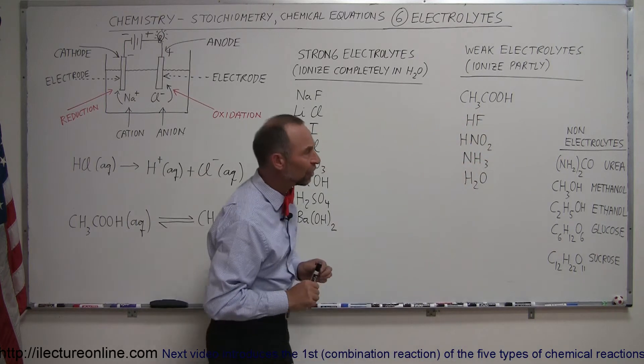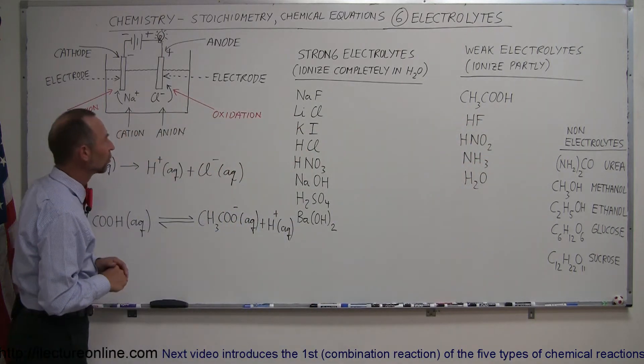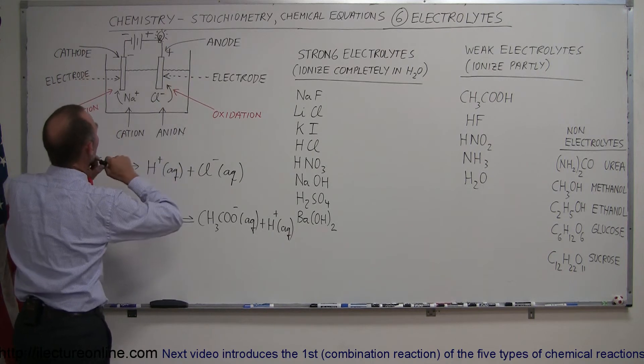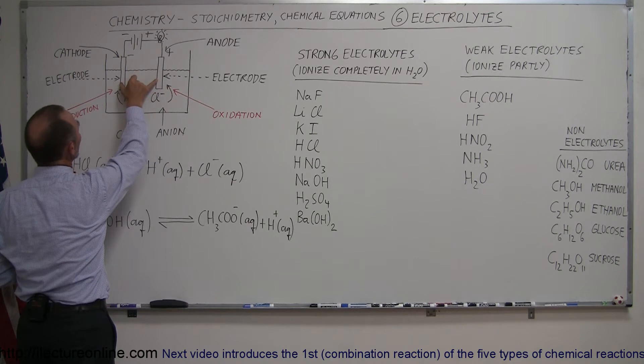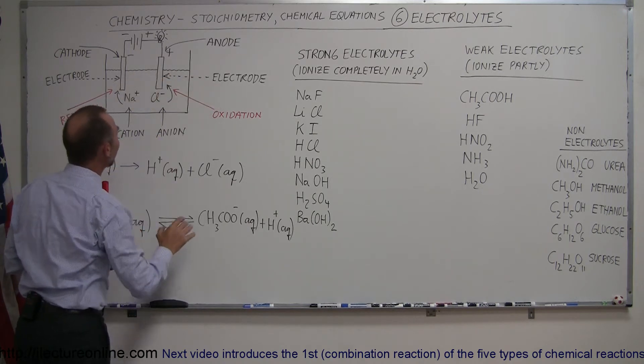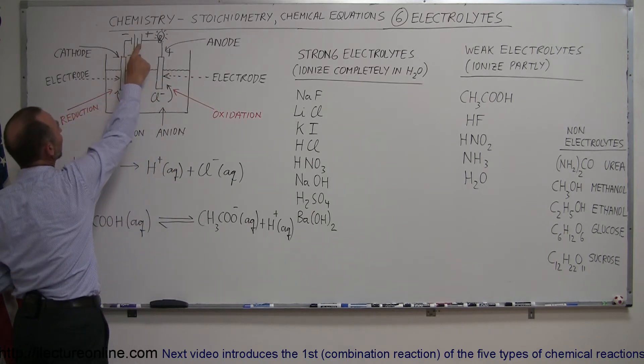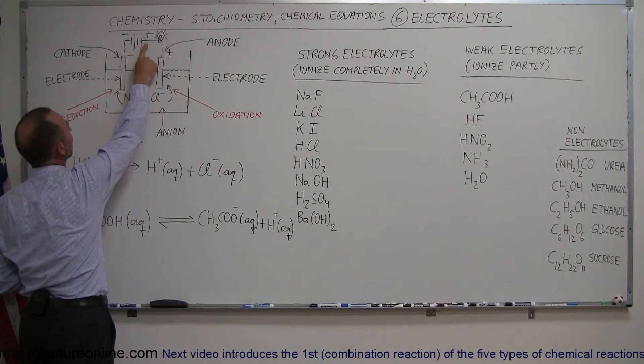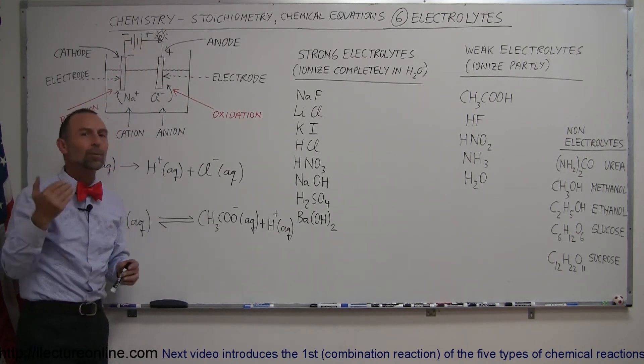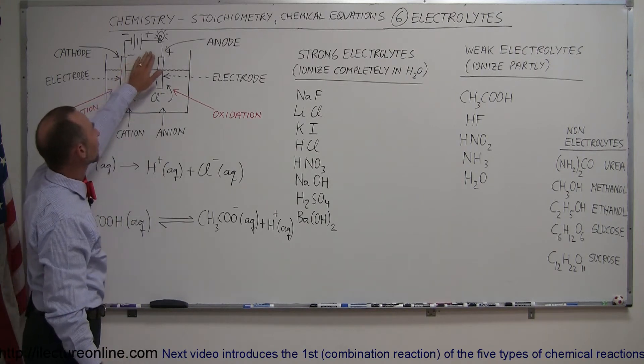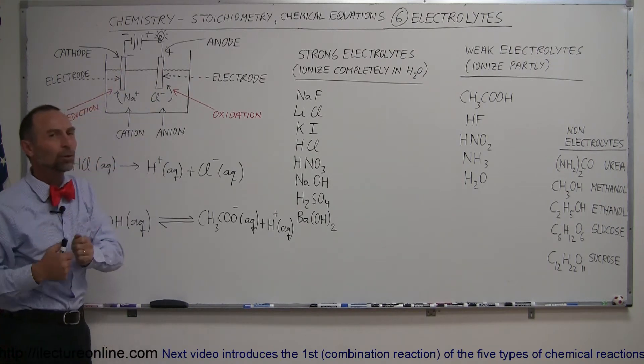I'll go to the definition of why we call them electrolytes. So let's say we have a beaker of water and we put two metal bars in there. Those metal bars are called electrodes, and we attach those to a battery. Notice this is the positive end and this is the negative end. To see if these things are electrolytes, we connect a light bulb.